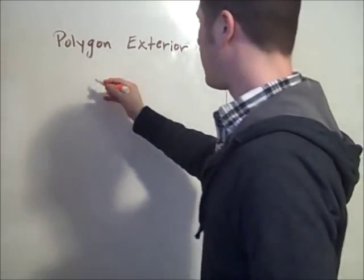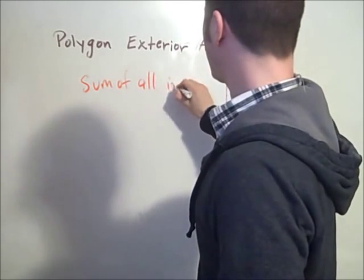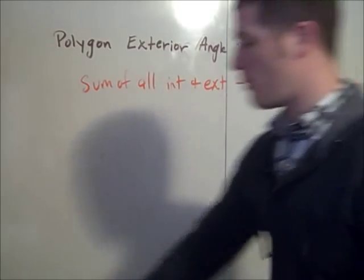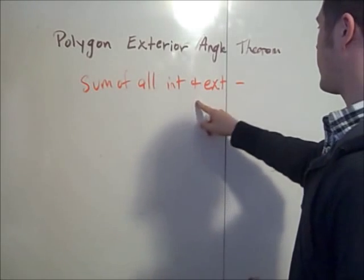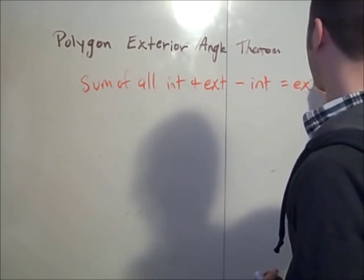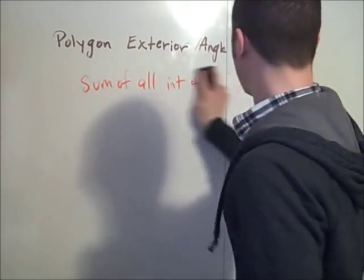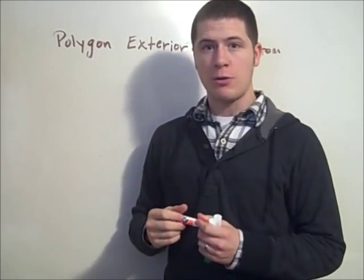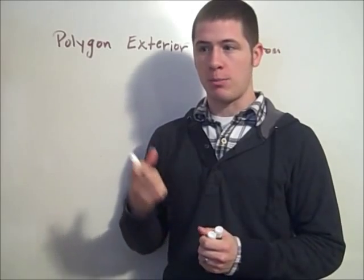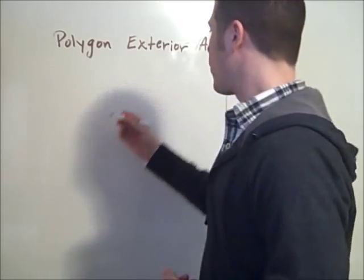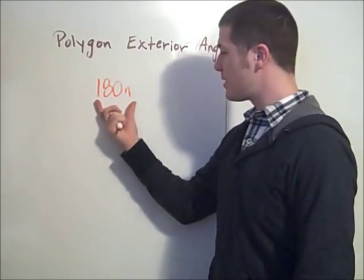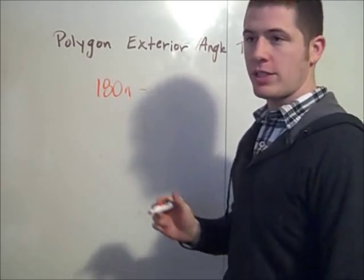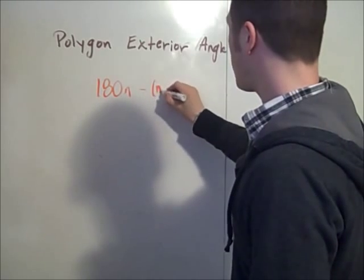What we are going to do is take the sum of all interior and exterior angles, subtract the measure of all the interior angles, and we will be left with all the exterior angles. The sum of all the interior and all the exterior angles is 180 times n, since there are n straight angles each composed of an interior and exterior. We then subtract the measure of all the interior angles, which we established in our last video was (n − 2) times 180.